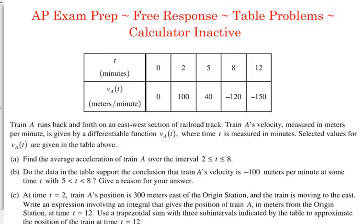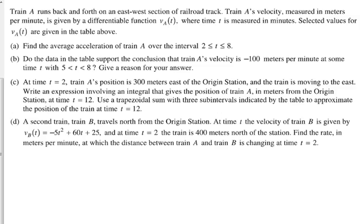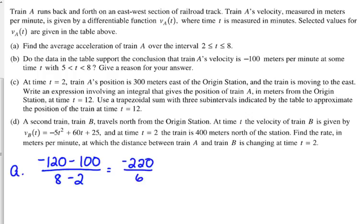that's just going to be the change in the velocities over that amount of time. Divided by the amount of time. So, it is going to be negative 120 minus 100 change in the velocities over the change in time. Again, the way that I understand it, technically that's an acceptable answer, but that is negative 220 over 6, which both of those are divisible by 2. So, it is negative 110 over 3.